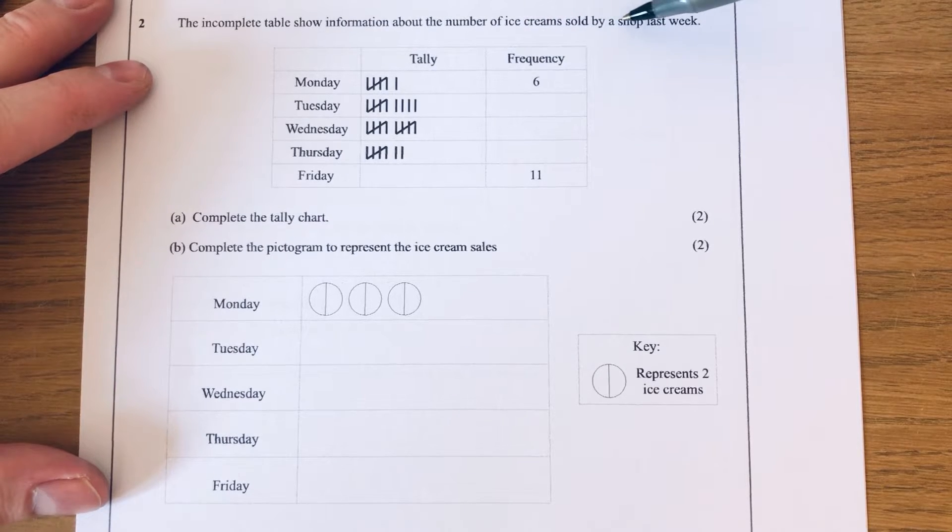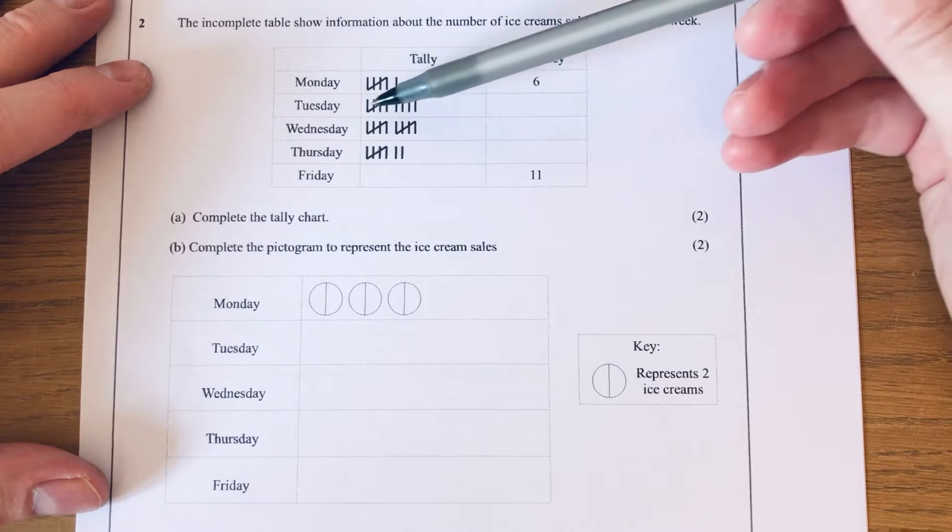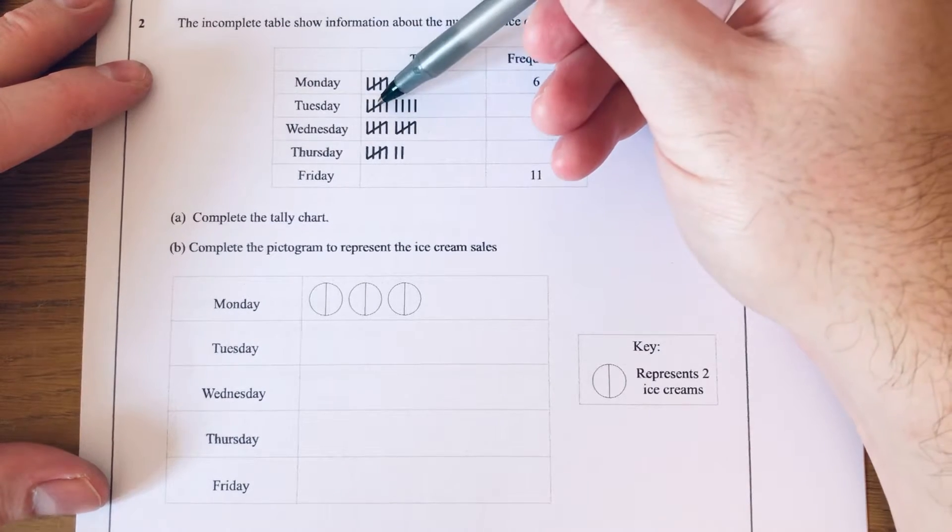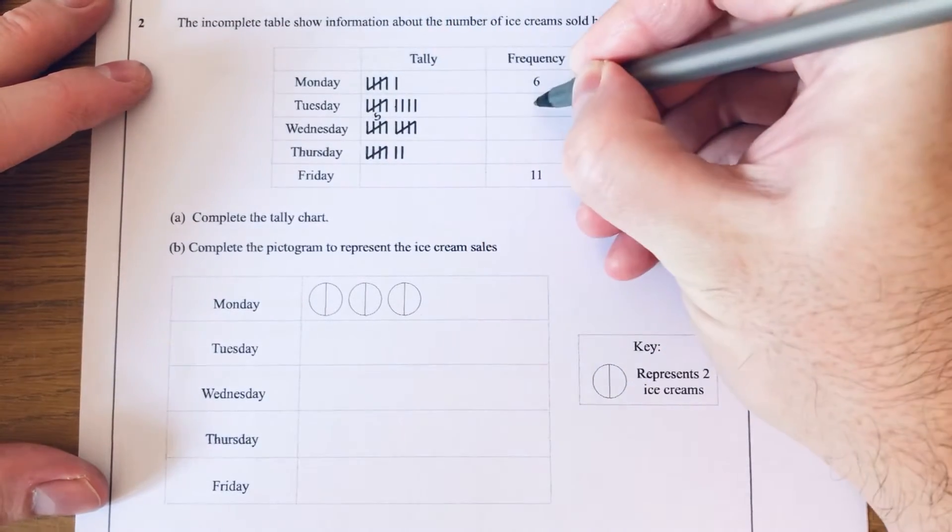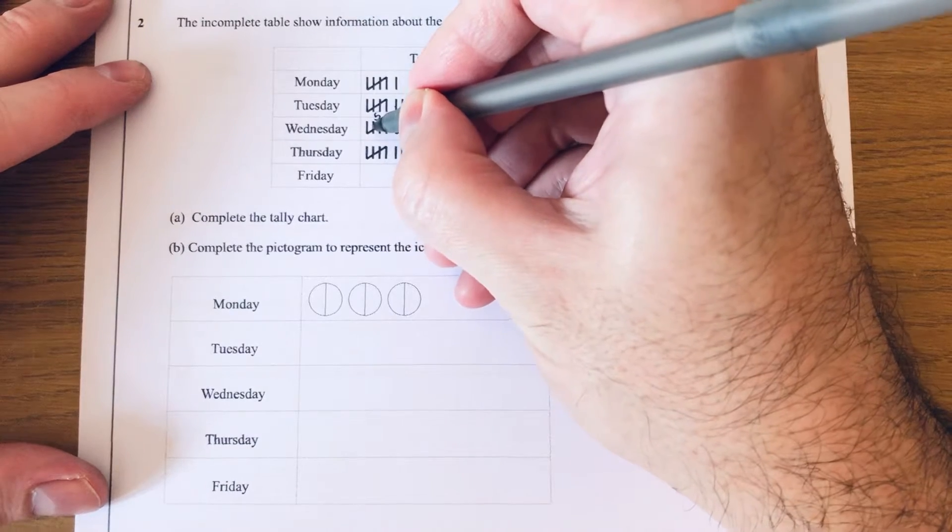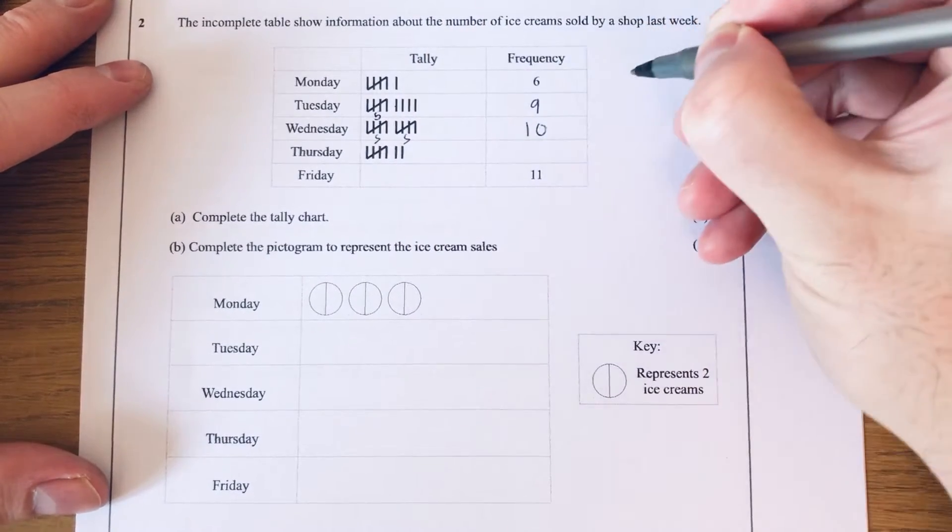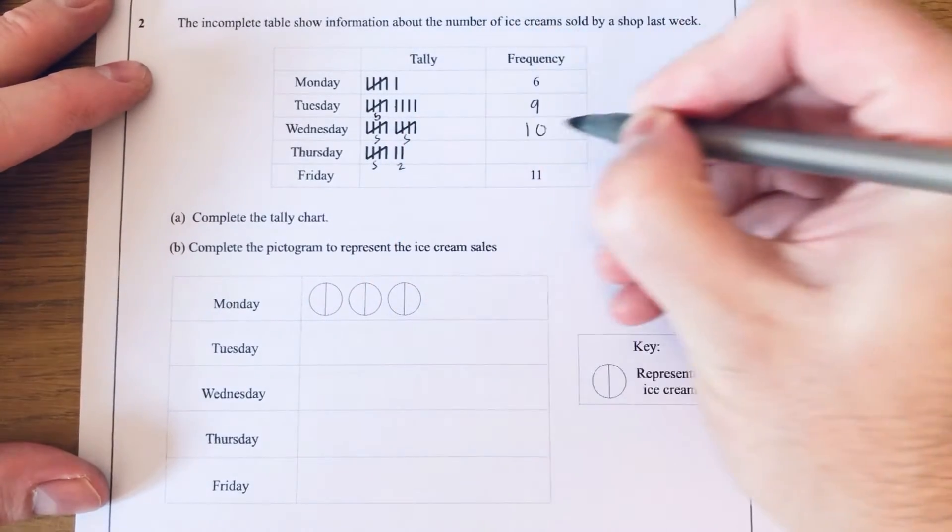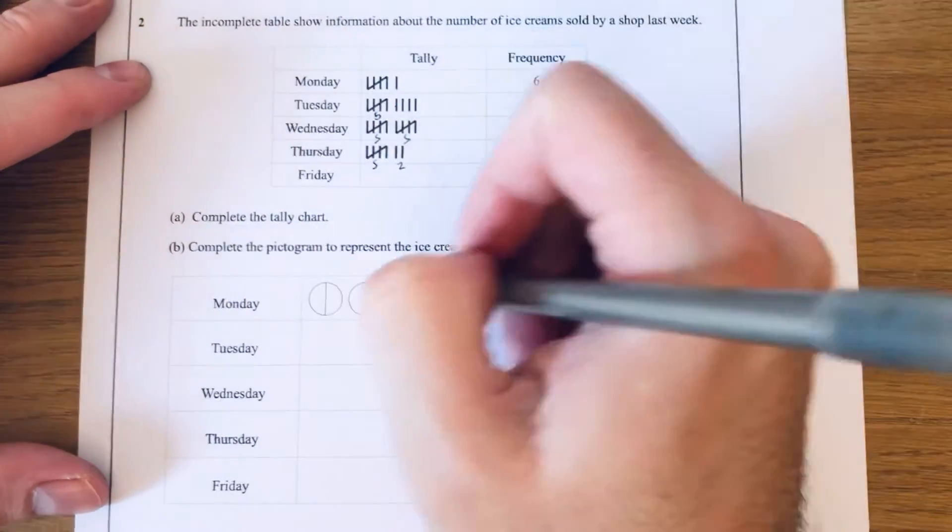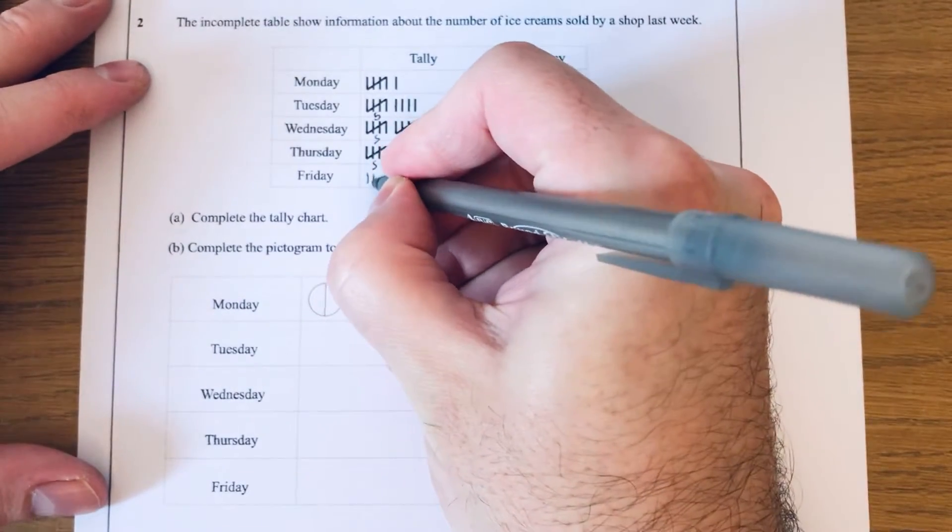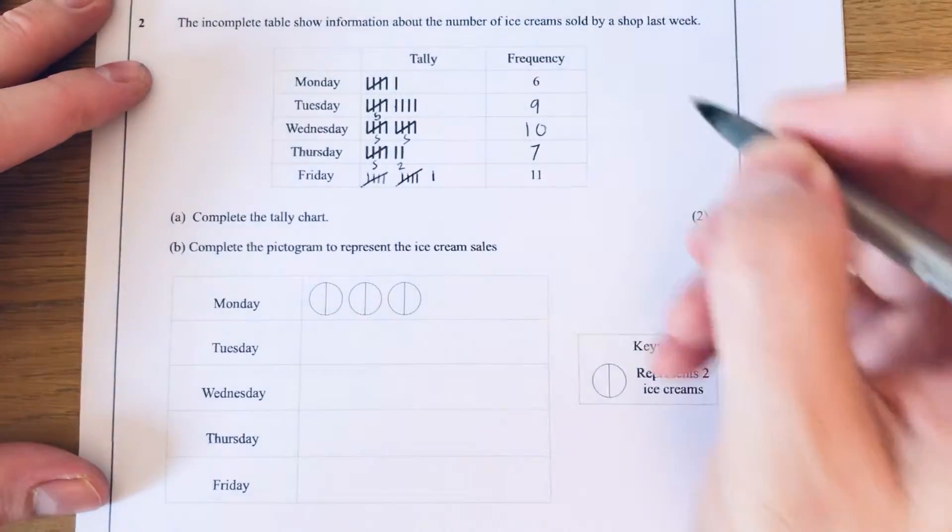We've got six on Monday, and then we just need to do Tuesday. We've got five here, six, seven, eight, nine. For Wednesday we've got five and five, that's ten. Thursday we've got five and a two, so five and two is seven. And then Friday, we've got to fill in the tally, so we need to do five, ten, and an extra one to make eleven.